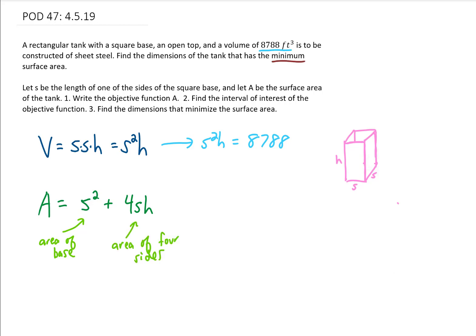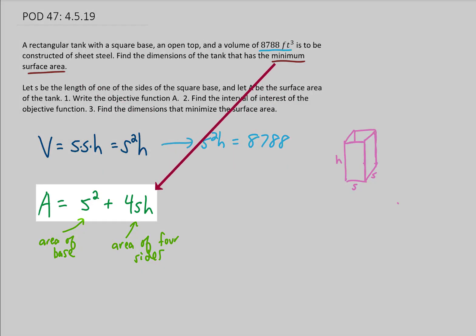Now we're asked to find the dimensions of the tank that give us a minimum surface area. That means that we need to minimize this area function. However, there's a problem. We know how to minimize functions of one variable, but not functions of two variables. So it would be ideal if we could get rid of this H maybe, so that we could have this area as just a function of S.